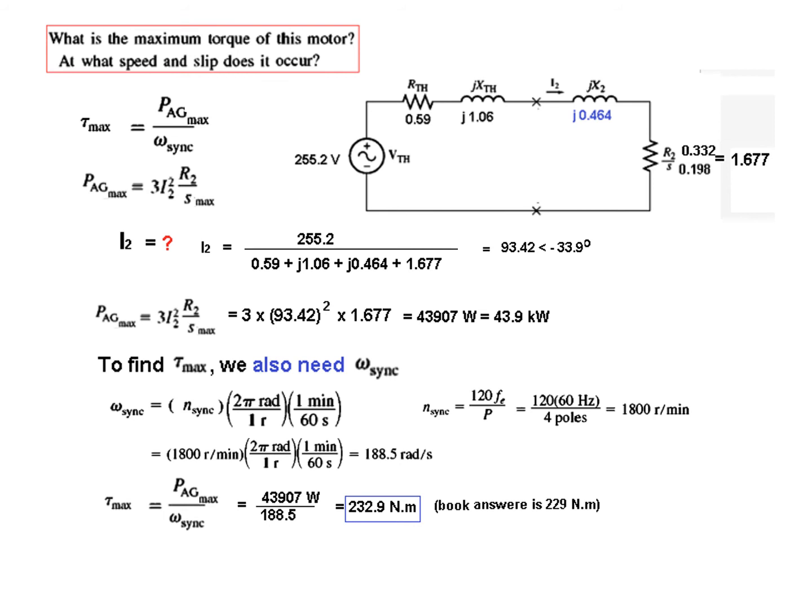At what speed is the maximum torque occurring? N_max equals 1 minus slip times N_sync, which is 1 minus 0.198 times 1800, giving a speed of 1444 revolutions per minute for maximum torque.